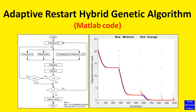Hi everyone, this is an Adaptive Restart Hybrid Genetic Algorithm. This genetic algorithm is designed to overcome the weakness of the traditional genetic algorithm. First, it can explore very large search spaces of the optimization problem because it has a mechanism to automatically restart its search process if getting stuck in local optima. Second, it can effectively exploit the promising regions in the search space because it has a local search algorithm integrated inside the loop. Thereby, this genetic algorithm is very robust to search for global optimal solutions for large-scale optimization problems.